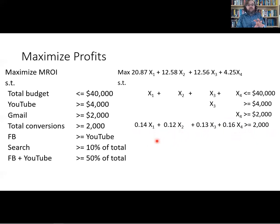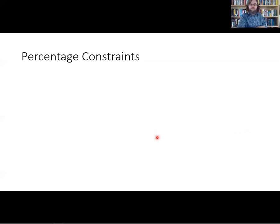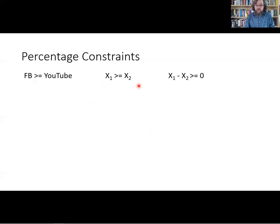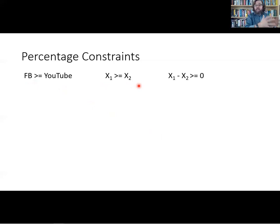The remaining constraints take a little more discussion — you could call them percentage constraints or ratio constraints. It's easy to say the amount we spend on Facebook should be greater than or equal to the amount we spend on YouTube: X1 ≥ X3. But to solve this in Solver, we need standard form — all variables on one side of the inequality and only constants on the other. So we subtract X3 from both sides, giving us X1 minus X3 ≥ 0.